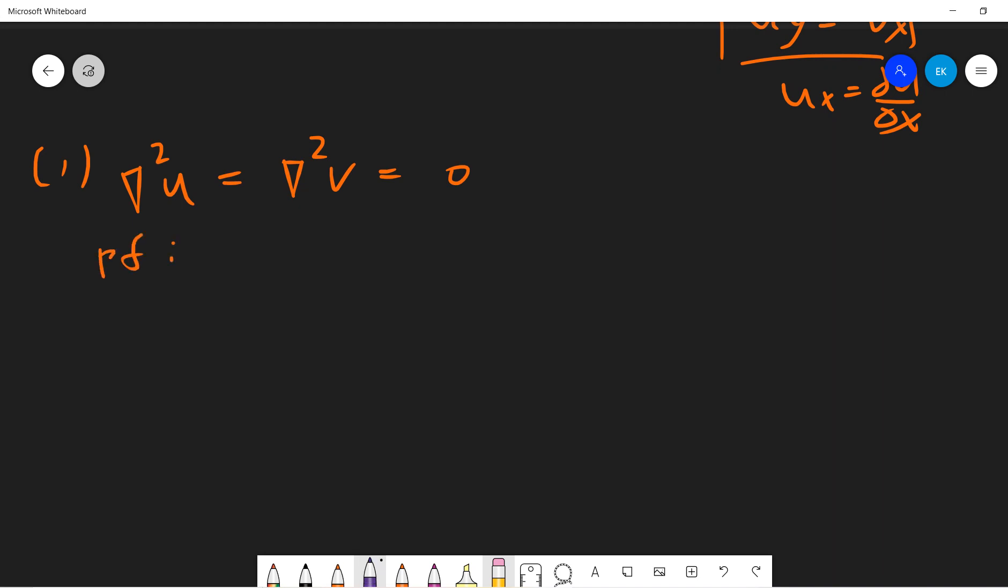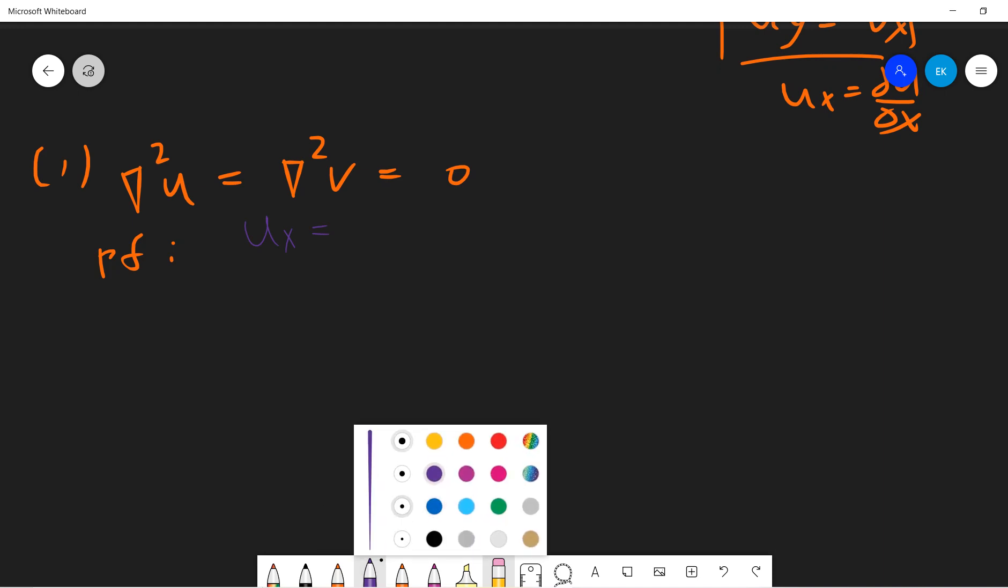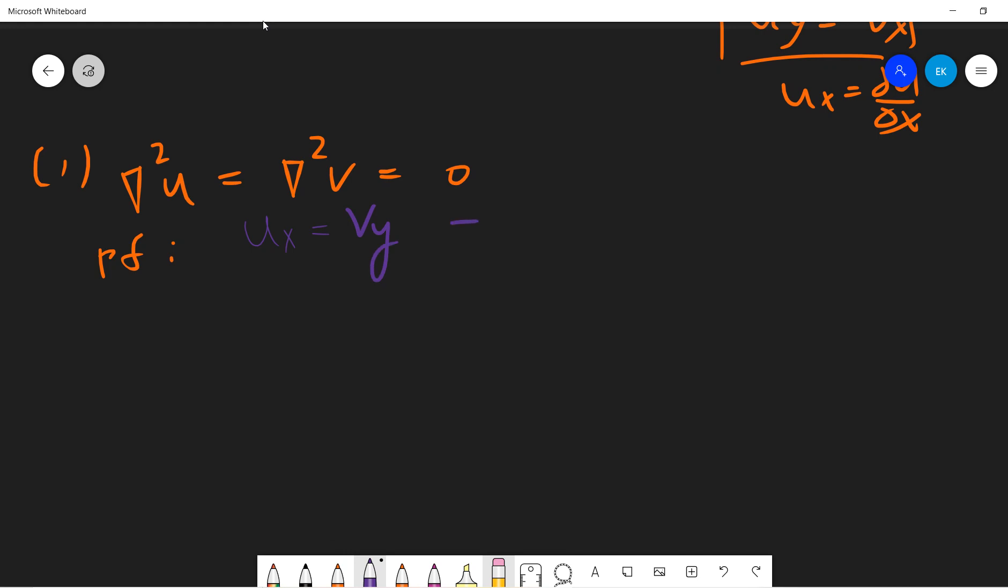The proof is very straightforward. Since ux is vy, then uxx is vyx, which equals vxy. And remember that vy equals ux, so vx equals minus uy. Therefore this is minus uyy, so we have uxx plus uyy is zero.